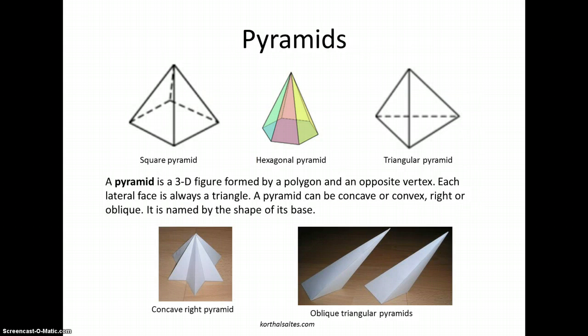A pyramid is a 3D figure formed by a polygon on the base, and an opposite vertex. Each lateral face is always a triangle. The pyramid can be concave or convex, it can be right or oblique, and it's named by the shape of its base.